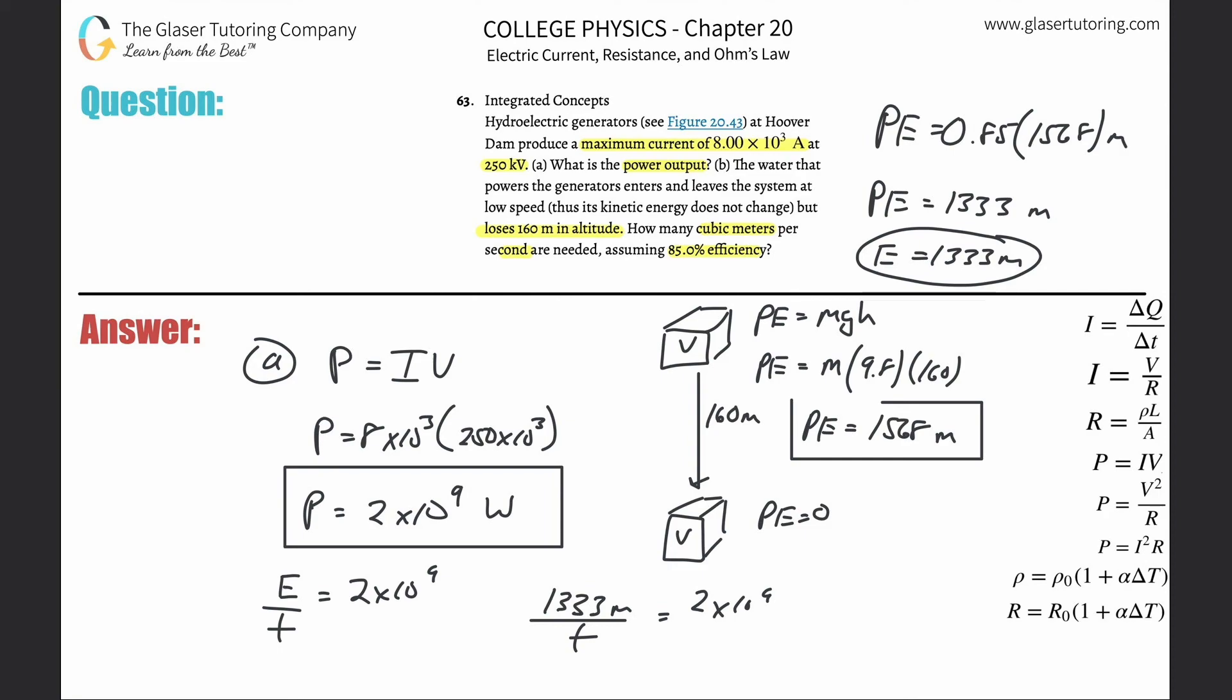Remember they wanted us to find how many cubic meters per second. If we just get rid of this 1333 by cross multiplying it down, let's clean that up.